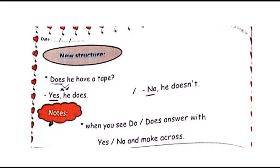Today we have a new question: Does he or she have tape? We said before, when I see do or does, answer with yes or no and make a cross. So when I see do or does in the question, I'll answer yes or no. Does he have a tape? I'll say yes, he does or no, he doesn't. And we said before, no takes doesn't.